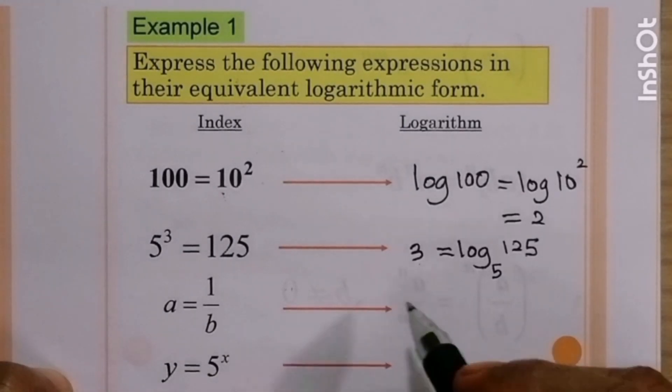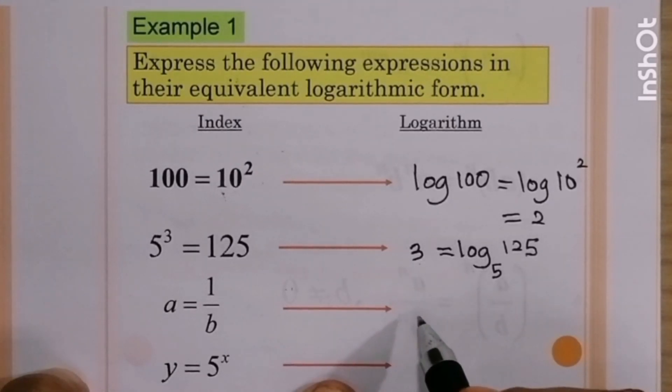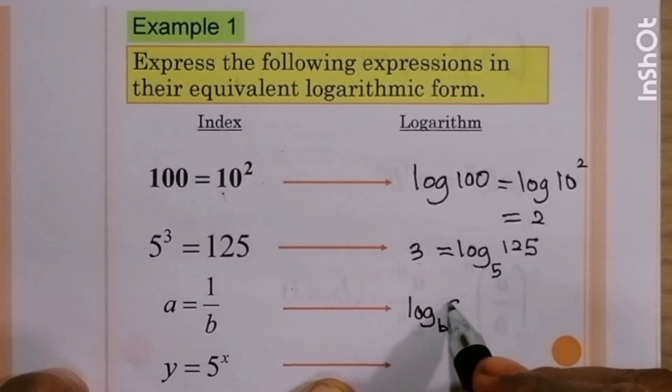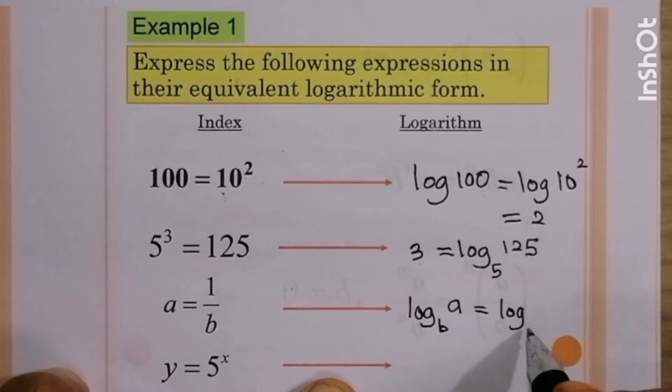A equal to 1 over B. We taking log base B both sides. Log base B of A equal to log base B of 1 over B. Refer to indices chapter, B to the 1 over B is equal to B negative 1, so the answer is negative 1.